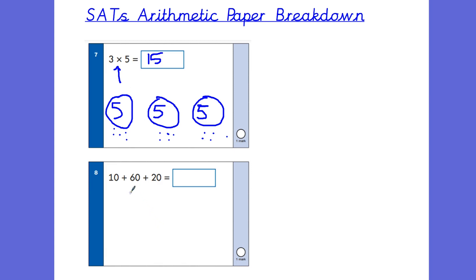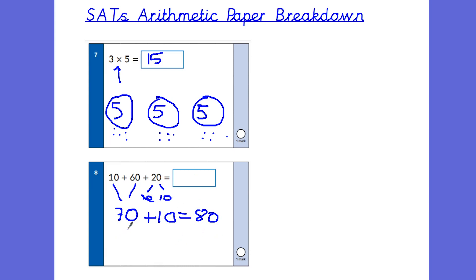Number 8: we've got multiples of 10 to add. I would get the child to add 60 add 10 — count on 10, makes 70. Then 20 is made up of 2 tens, so 70 add 10 is 80, then add another 10 gives 90. This is actually assessing whether the child can count forwards and backwards in 10s — the most efficient way is to look at the multiples of 10 and add them together.